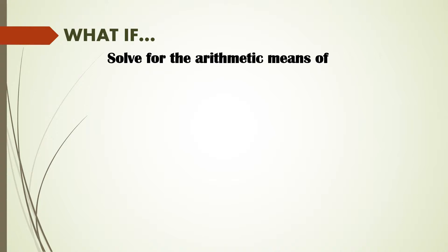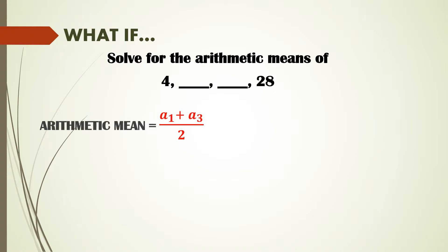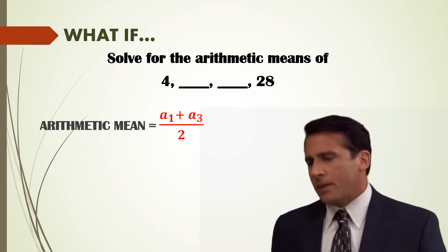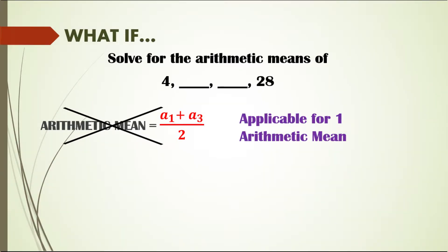Finding a single arithmetic mean of an arithmetic sequence was easy — just use the formula (a₁ + a₃) / 2. But what if you are looking for two or more arithmetic means? For example: find the arithmetic means of 4, _, _, 28. You are looking for two arithmetic means here. Can we still use that formula? No, because it is applicable only for one arithmetic mean.